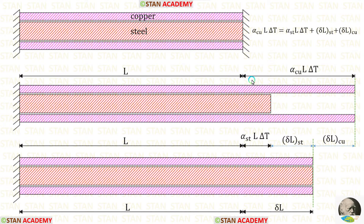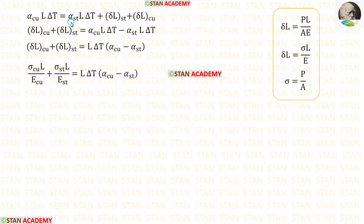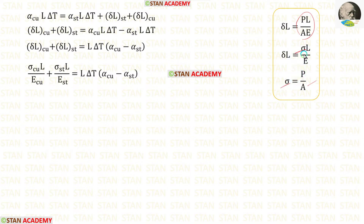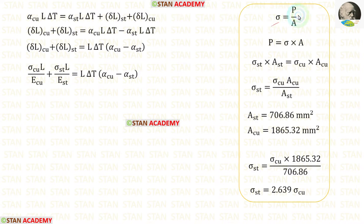Now let us make an expression. α_Cu × L × ΔT equals α_ST × L × ΔT plus delta L_ST plus delta L_Cu. Taking α_ST × L × ΔT to the other side, L × ΔT becomes a common factor we can take outside. We know the formula for change in length is PL upon AE, and since P upon A is stress sigma, we can apply that to express delta L_Cu and delta L_ST in terms of stress.